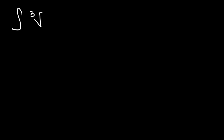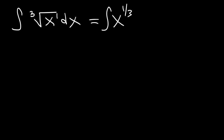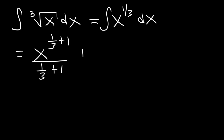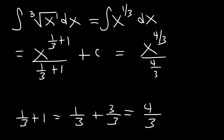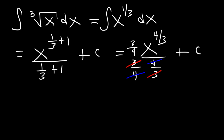You can also use the power rule when integrating radical functions. If we want to find the antiderivative of the cube root of x, first rewrite it as x to the one-third, then apply the power rule: x to the one-third plus one, over one-third plus one. Getting common denominators, 1 equals 3 over 3, so 1 plus 3 over 3 equals 4 over 3. This gives x raised to four-thirds divided by 4 over 3, and multiplying by the reciprocal 3 fourths gives us three-fourths x raised to the 4 over 3 plus c.